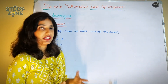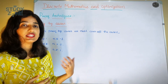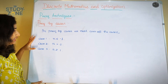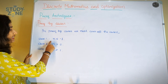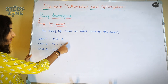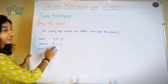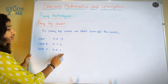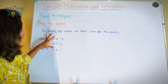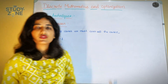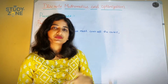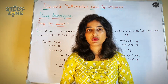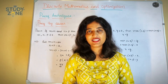In proof by cases, the main thing is we have to prove all the cases. We must cover or prove all the cases: case 1 is n less than or equals to minus 1, case 2 is n equals to 0, and case 3 is n greater than or equals to 1. We have to cover all these cases and then prove the theorem. Let's go through the examples one by one.